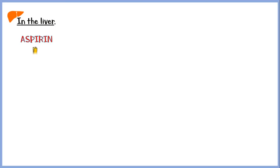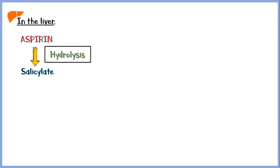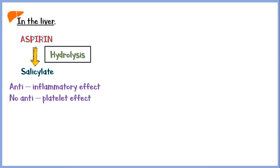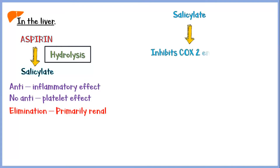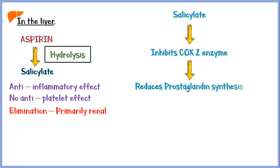In the liver, aspirin is hydrolyzed into salicylate, which is the actual anti-inflammatory metabolite of aspirin. But unlike aspirin, it has no anti-platelet effect. Elimination of salicylate is primarily renal. Salicylate works by inhibition of the COX-2 enzyme, which reduces the synthesis of prostaglandins, and ultimately reduces inflammation, pain, and fever.